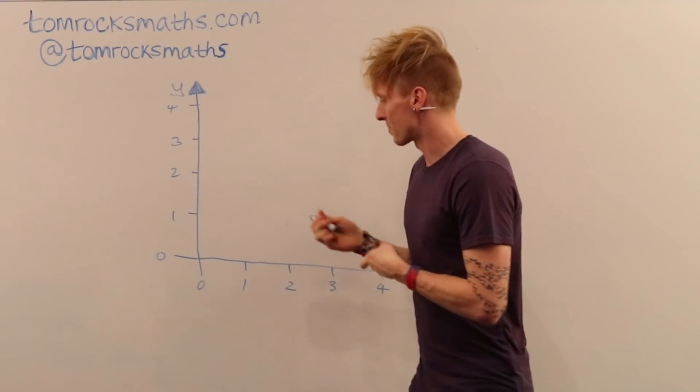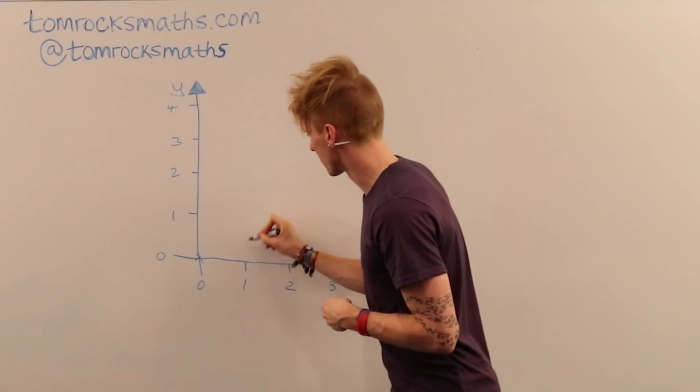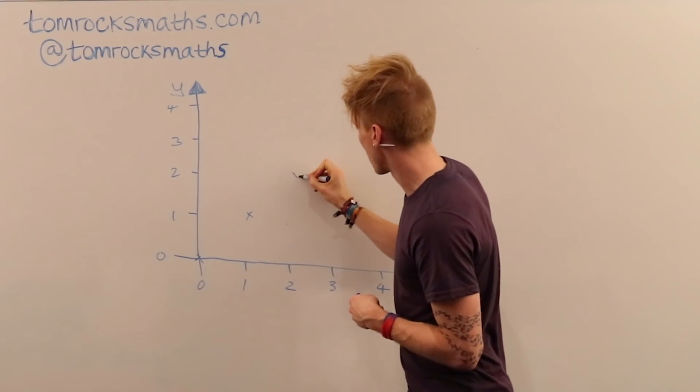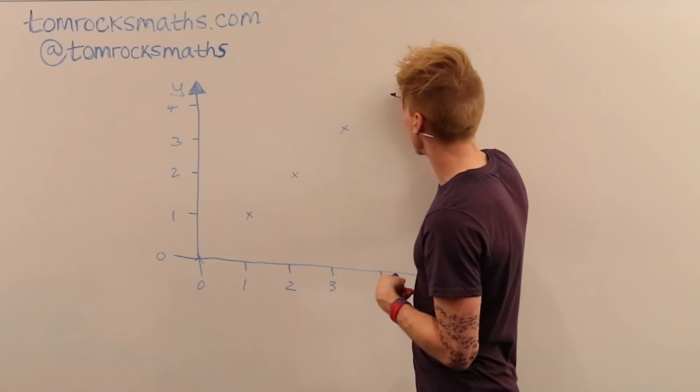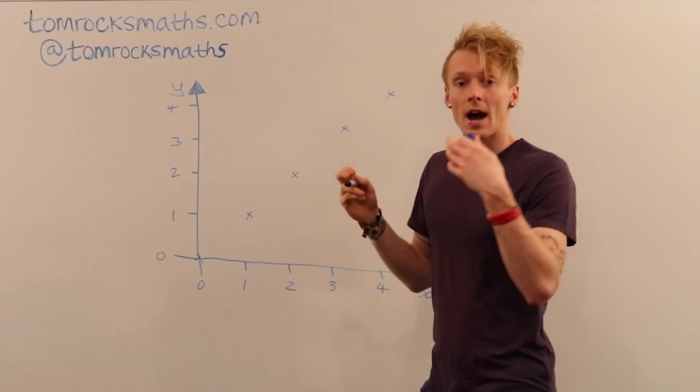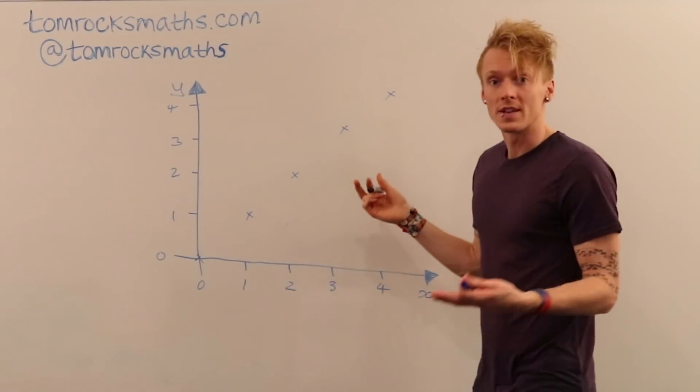So we must pass through 0,0, we must pass through 1,1, when x is 2, y has to be the same which is 2, same for 3 and 3, same for 4 and 4.